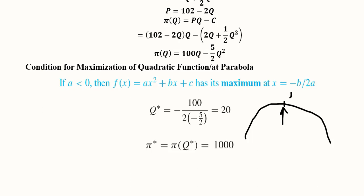This is that point where the maximized profit will take place. Now we have this condition that tells us if a negative value of a exists—that is, the coefficient of the variable with the square term—so it is minus 5 over 2. When this happens, which is holding true here, the quadratic equation has a maximum.